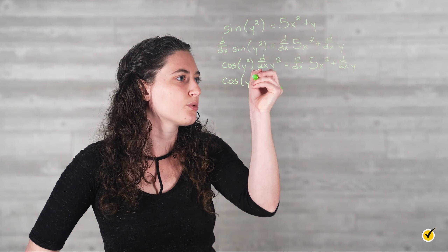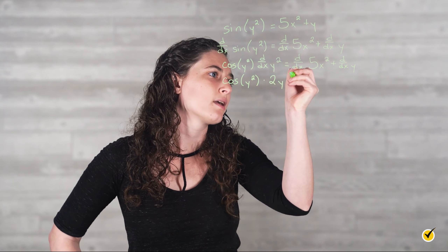So we'll have cosine of y squared times 2y dy over dx is equal to d over dx of 5x squared plus d over dx of y. We can rearrange the left side to get 2y cosine of y squared dy over dx. The other two derivatives are much simpler — the derivative of 5x squared is 10x, and the derivative of y is dy over dx. So overall, we now have 2y cosine of y squared dy over dx is equal to 10x plus dy over dx.